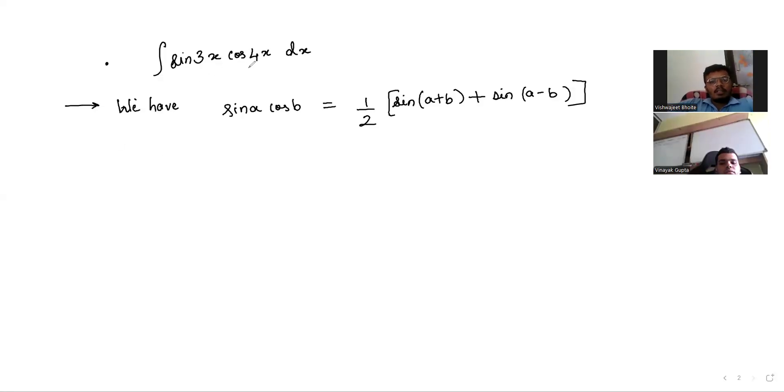We have to integrate sin(3x)cos(4x)dx, and we have the formula that sin(a)cos(b) is half [sin(a+b) + sin(a-b)]. So let's use that. Sin(3x)cos(4x)...